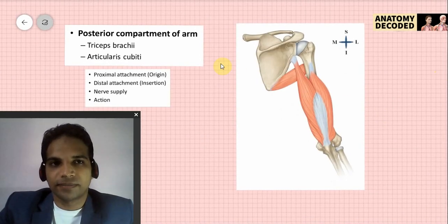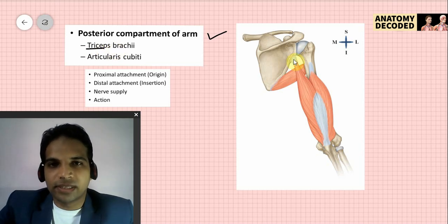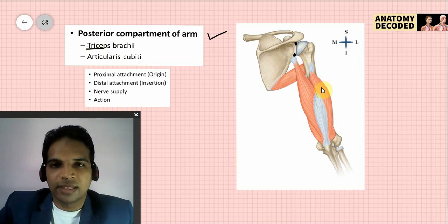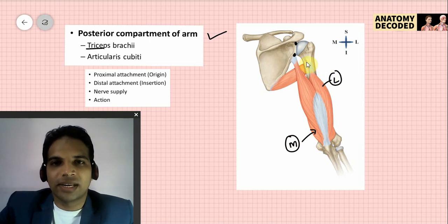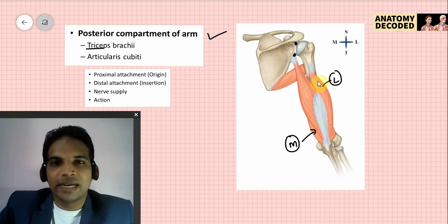Now let's cover the triceps brachii muscle and the articularis cubiti — the muscles of the posterior compartment of the arm. Triceps, as the name suggests, has three heads of origin. The long head of the triceps arises from the infraglenoid tubercle of the scapula. The lateral head arises from a ridge lateral to the spiral groove (also referred to as the radial groove) on the humerus. The medial head of the triceps arises from the posterior aspect of the shaft of the humerus, medial to the radial groove. The radial groove is the landmark to identify the lateral and medial heads.